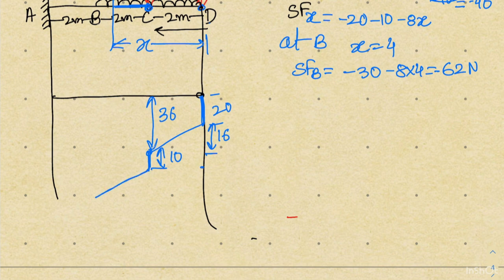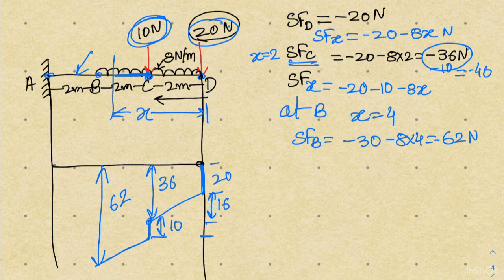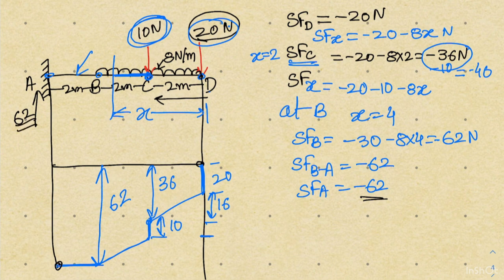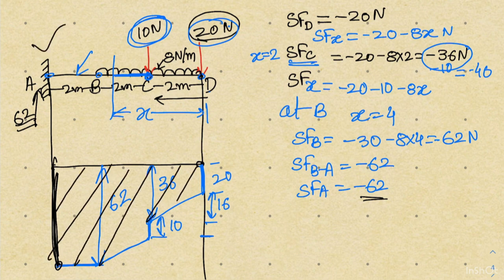Drawing the shear force distribution, from C to B the shear force increases from minus 46 to minus 62 newton. Beyond point B, from B to A, there is no additional load, so the shear force remains constant at minus 62 newton. At point A, if you calculate the reaction, you will find it is also 62 newton — this is your verification. If the reaction matches, your shear force diagram is correct. The upward reaction closes the shear force diagram at point A.